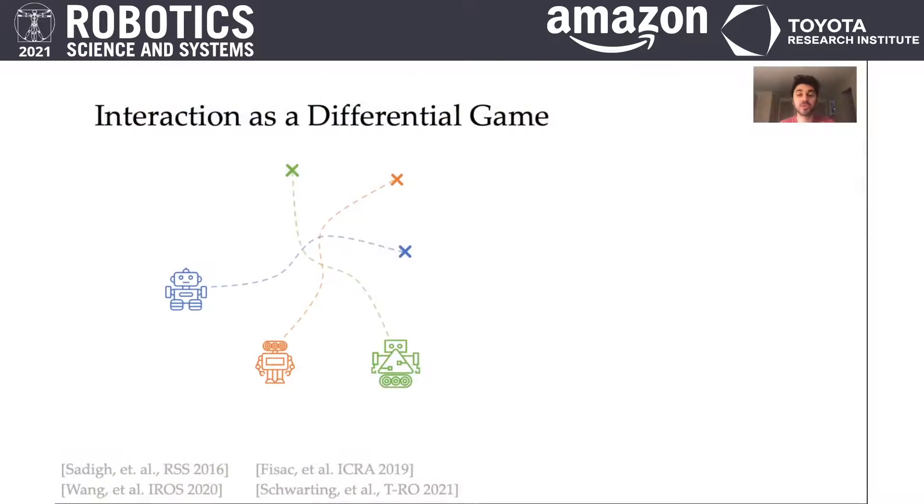It has been shown that multi-agent interactions can be modeled as games. In our formulation, we assume every agent has its own dynamics and its own cost function which is coupled with other agents. In such settings, interaction outcome is best represented by a Nash equilibrium.